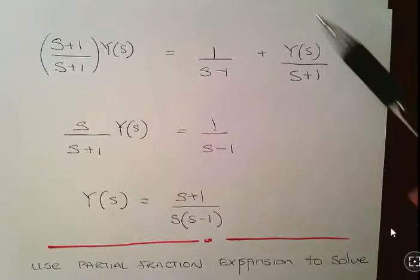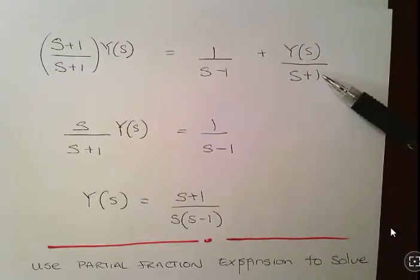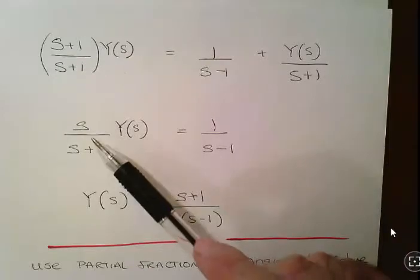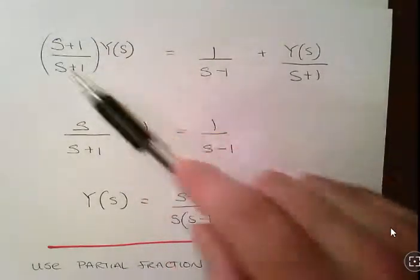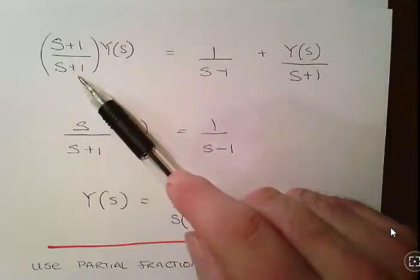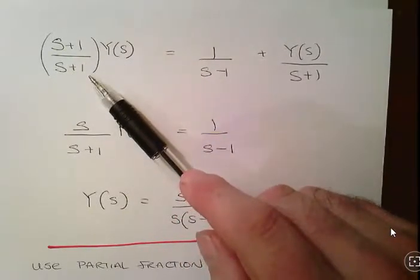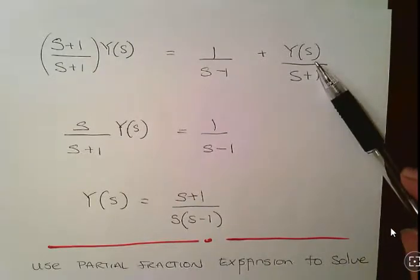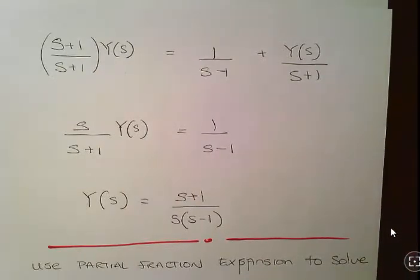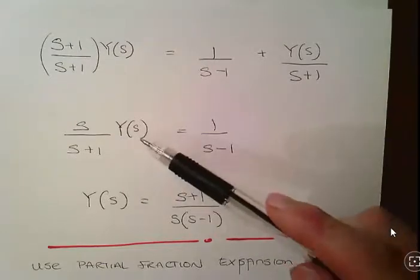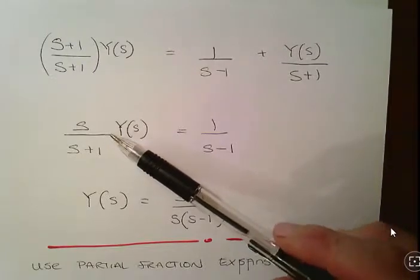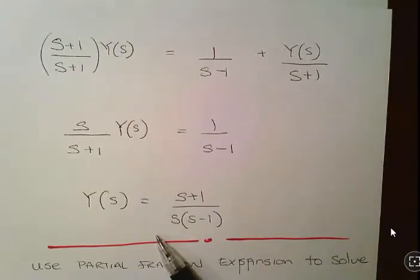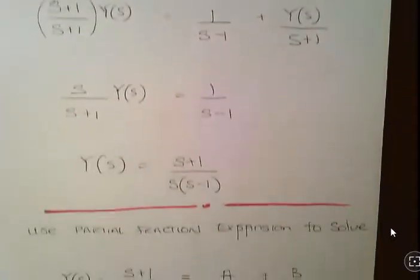I subtract y of s over s plus 1 from both sides. So I end up with s over s plus 1 times y of s. It's essentially this entire expression here, which has a denominator of s plus 1, minus this expression here. Now I'm going to cross multiply. So s times s plus 1 over s times s minus 1.